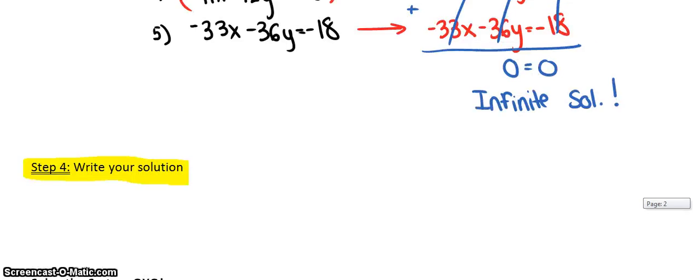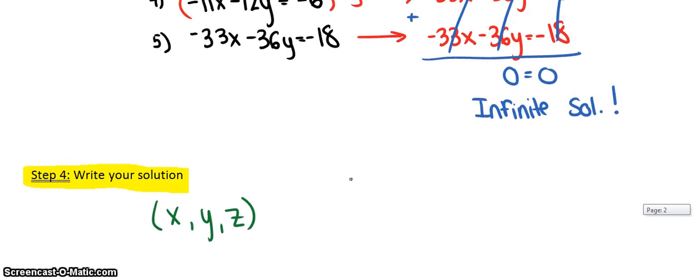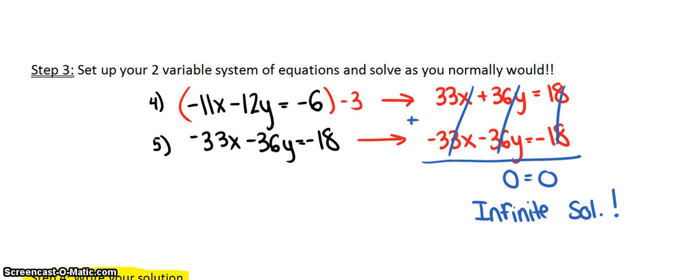To write our solution for an infinite solution problem, really if it's infinite solutions, that means our solution, if we're talking about a graph, would be (x, y, z), where x, y, and z can be an infinite amount of things. However, if I write it as x, y, and z, that means I could really plug in any combination of x, y, and z and it would work, when in reality it doesn't work. So instead of writing my solution as x, y, and z, I'm going to find a way to write all three variables in terms of one another.